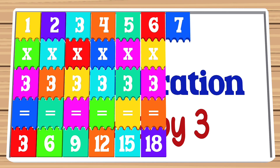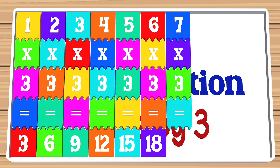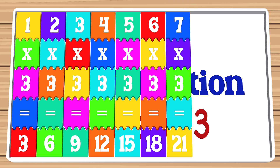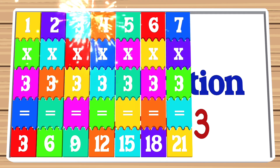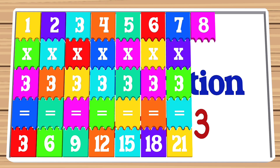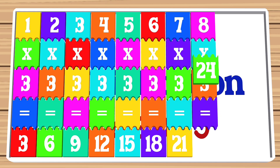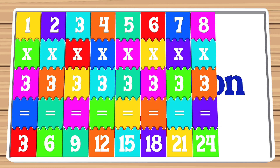7 times 3 is equal to 21. 8 times 3 is equal to 24.